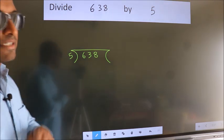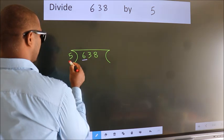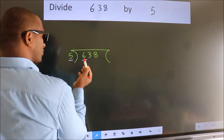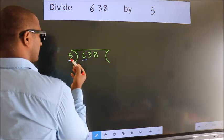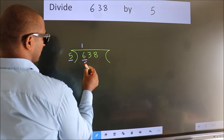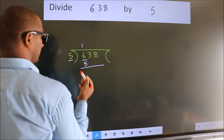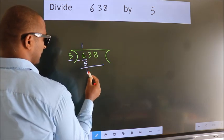Next. Here we have 6. Here 5. A number close to 6 in the 5 table is 5 once, 5. Now we should subtract. We get 1.